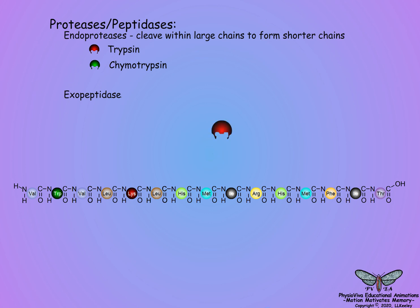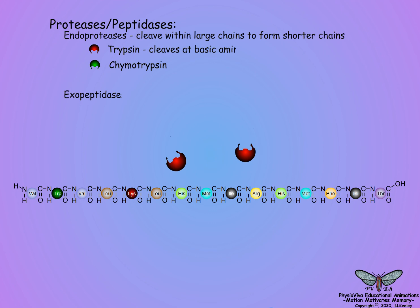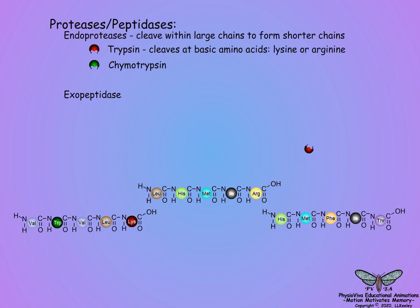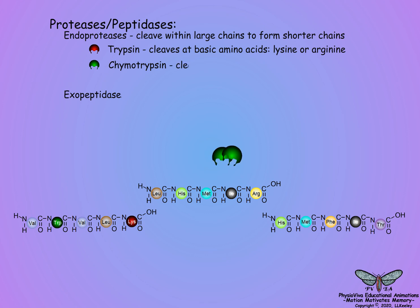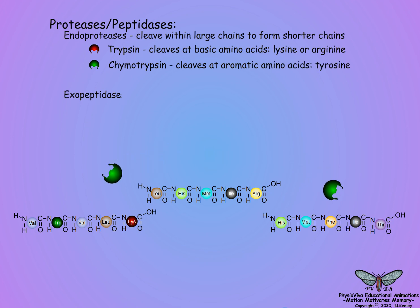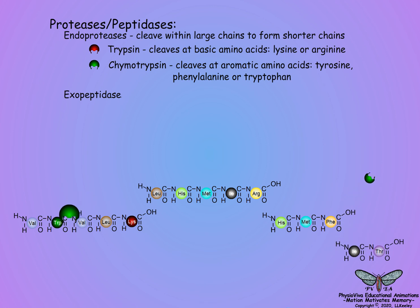Trypsin-like endoproteases break peptide bonds when the carboxyl group in the bond is one of the basic amino acids, lysine or arginine. Chymotrypsin-like endoproteases break peptide bonds when the carboxyl link is by amino acids with aromatic side groups such as tyrosine, phenylalanine, and tryptophan.